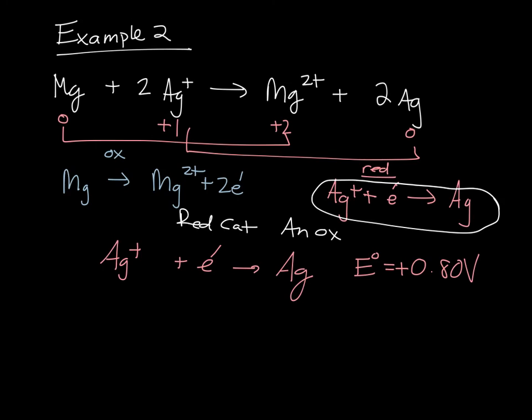My oxidation, my magnesium, the reduction potential for magnesium two plus yielding magnesium metal is negative 2.37.